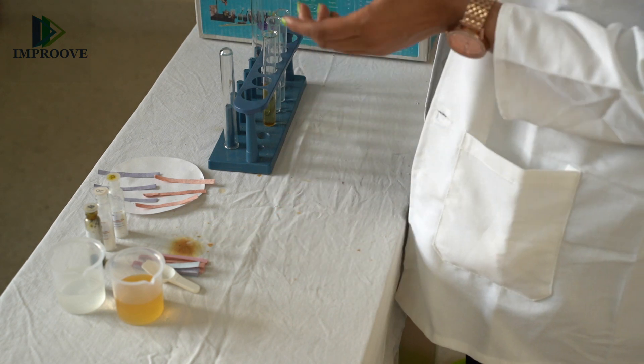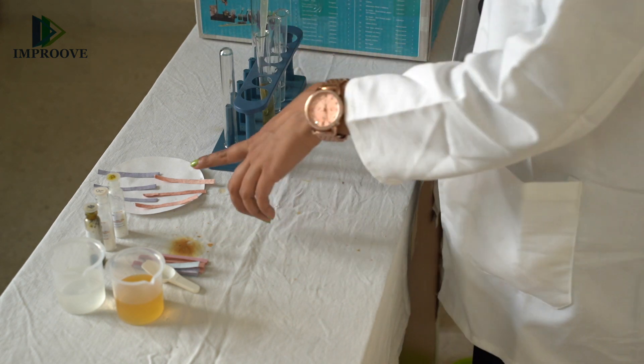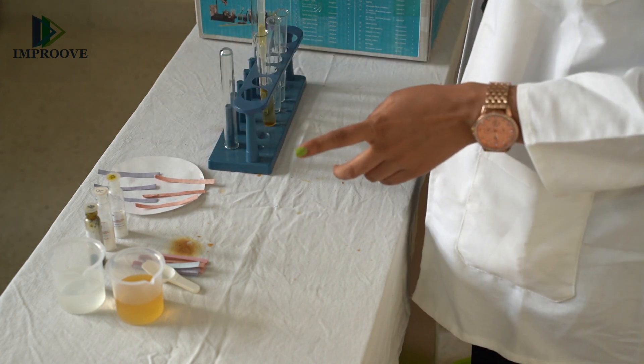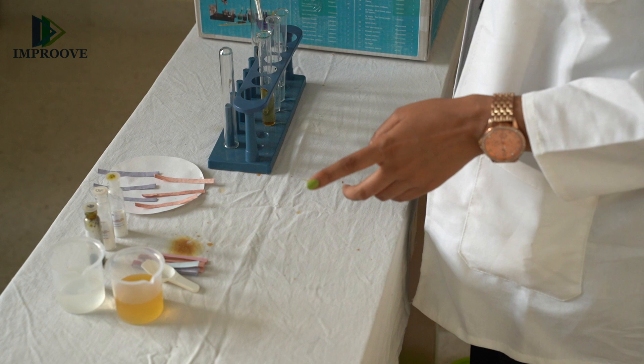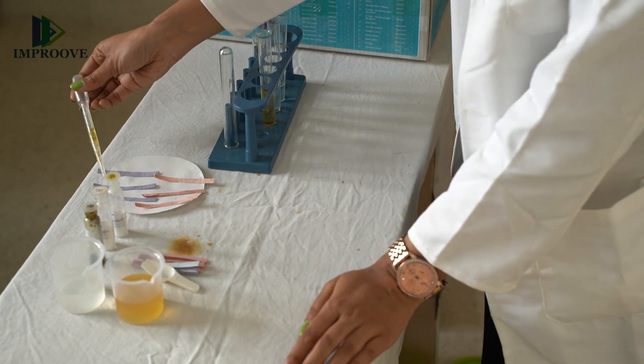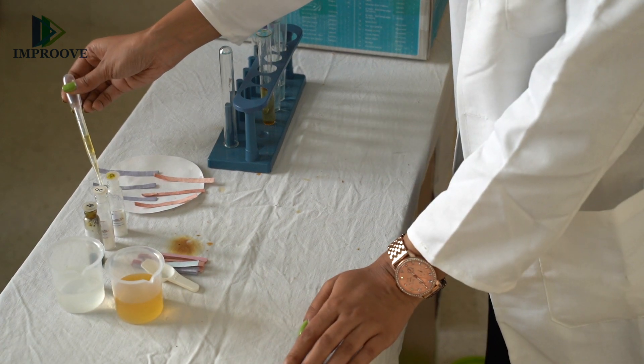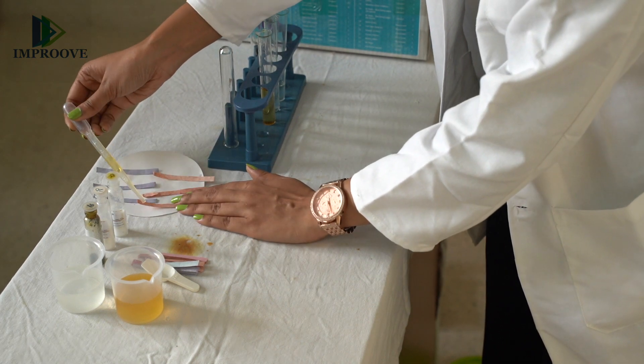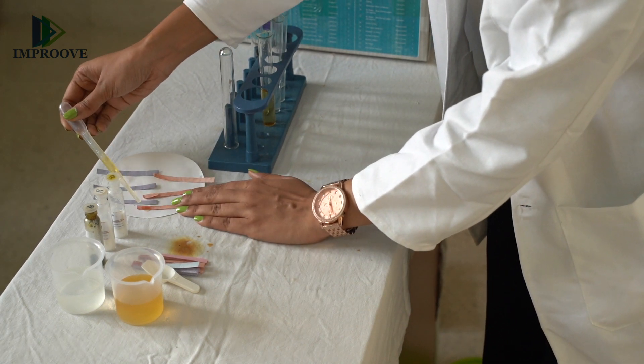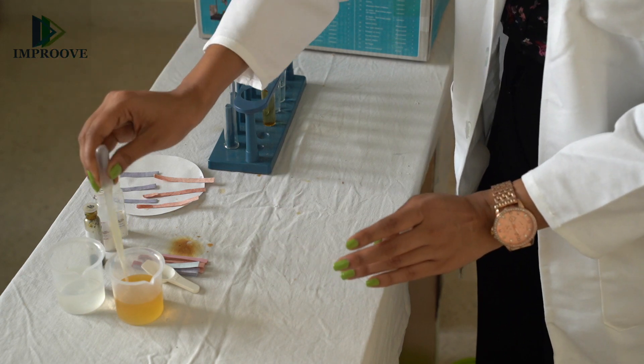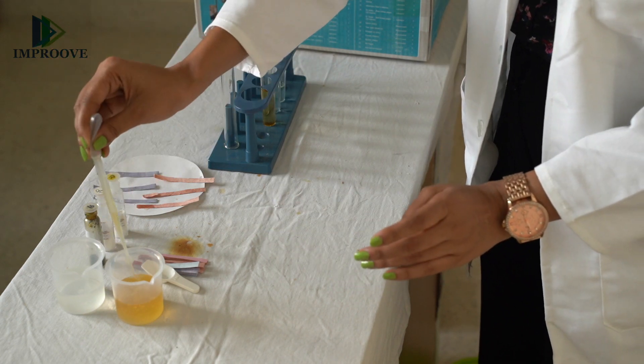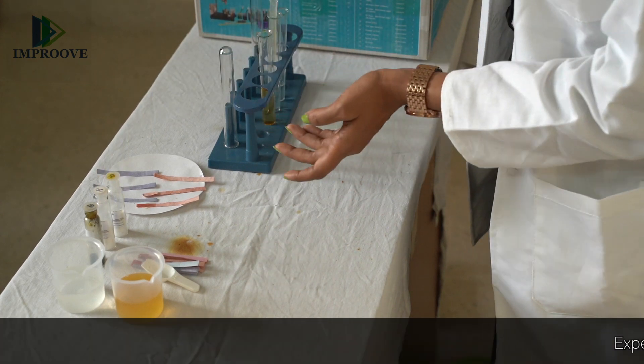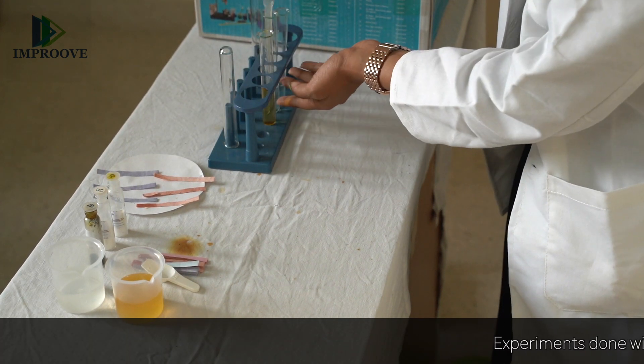Now we will take our dropper, and with the red and blue litmus papers here, we will drop about 1 or 2 drops of the ferric chloride solution on both the blue and red litmus paper. We will repeat this with the other two salt solutions and observe the color change on the litmus paper.